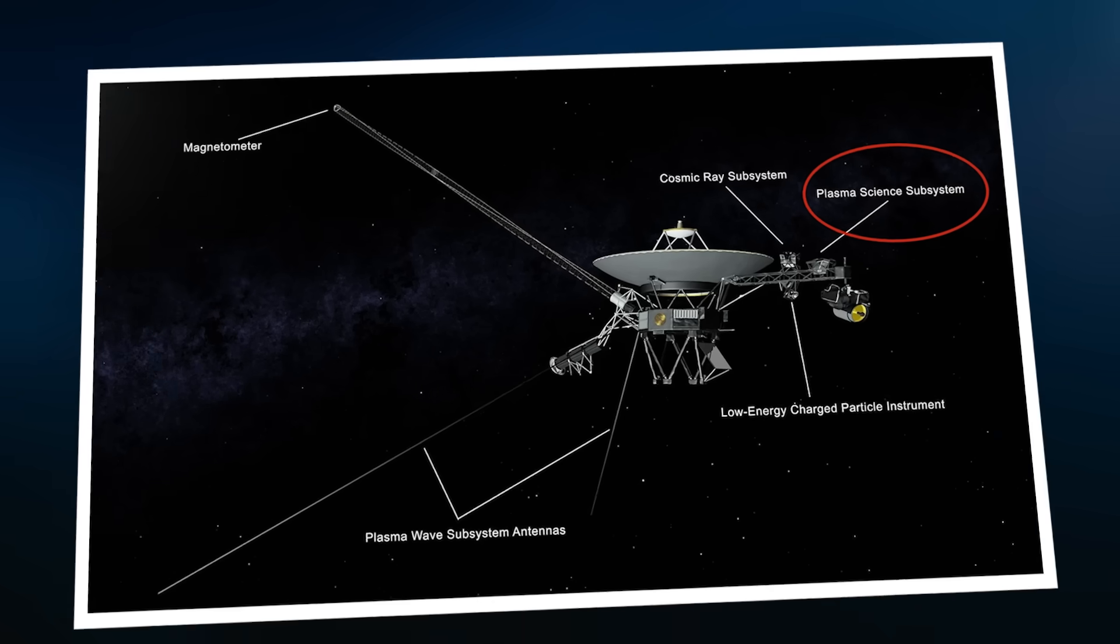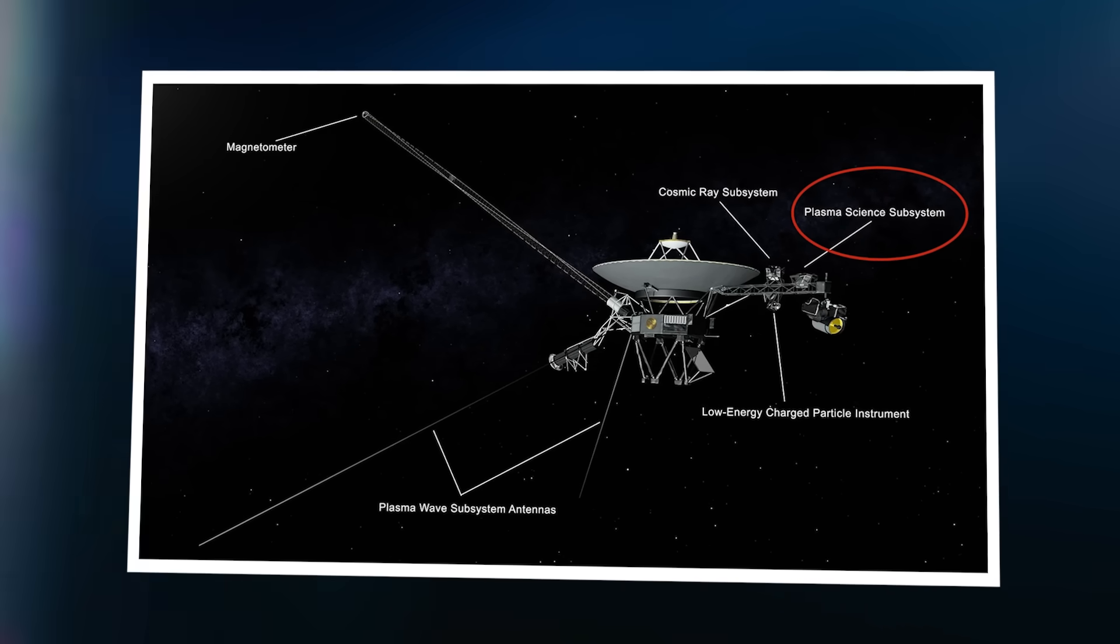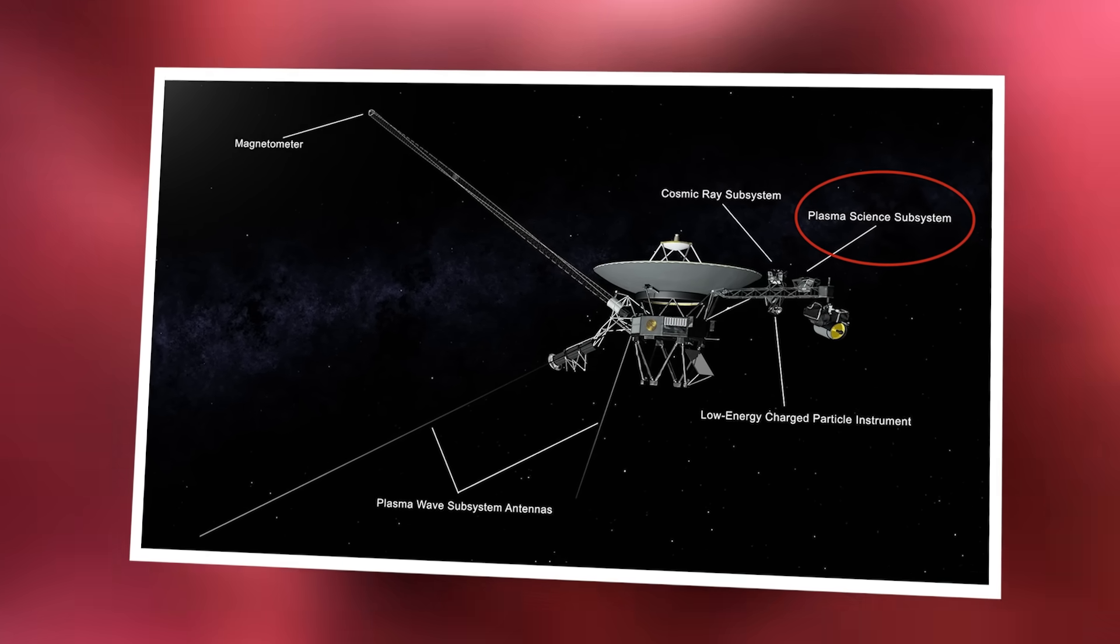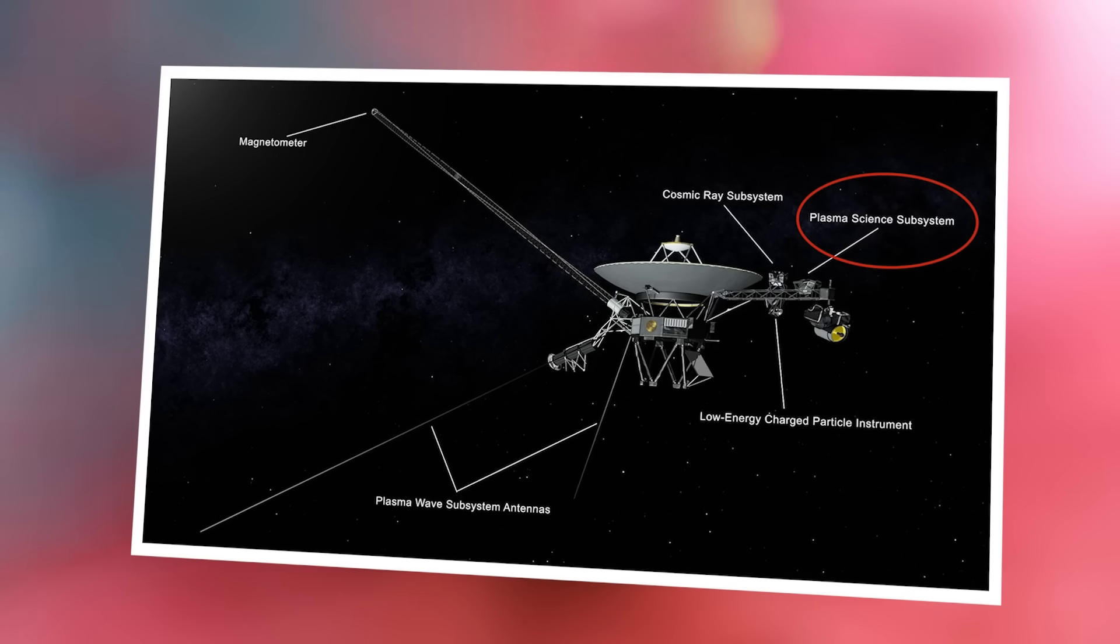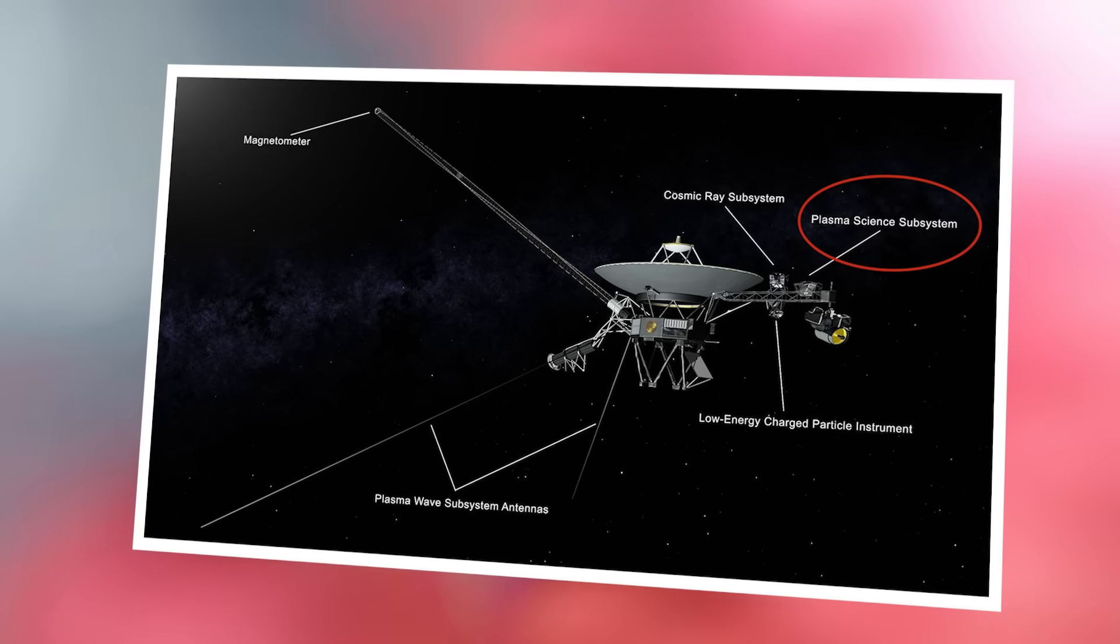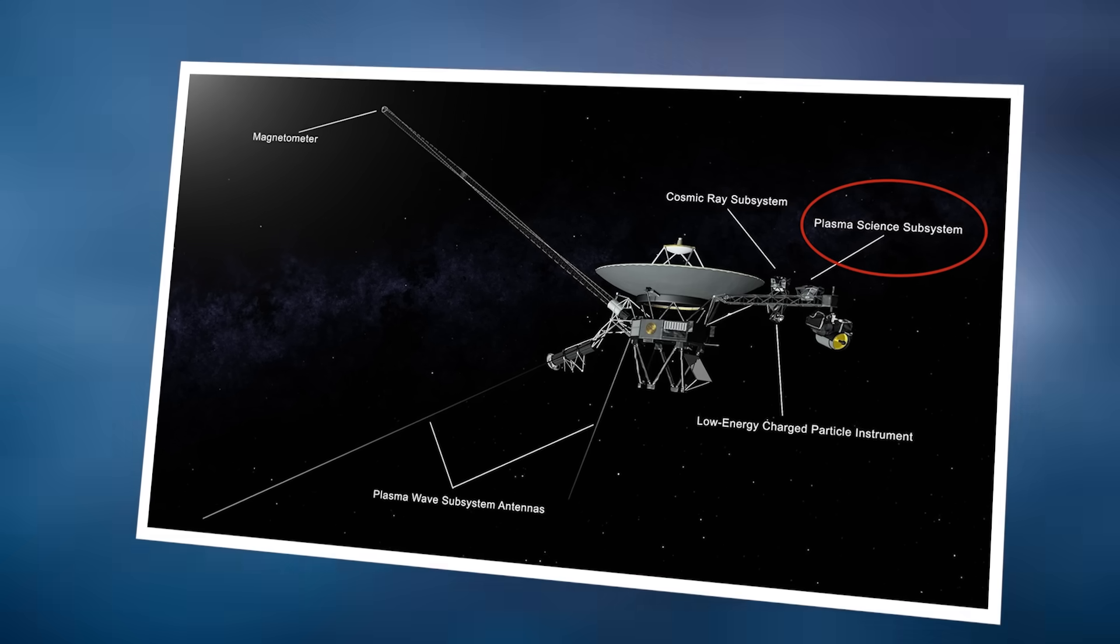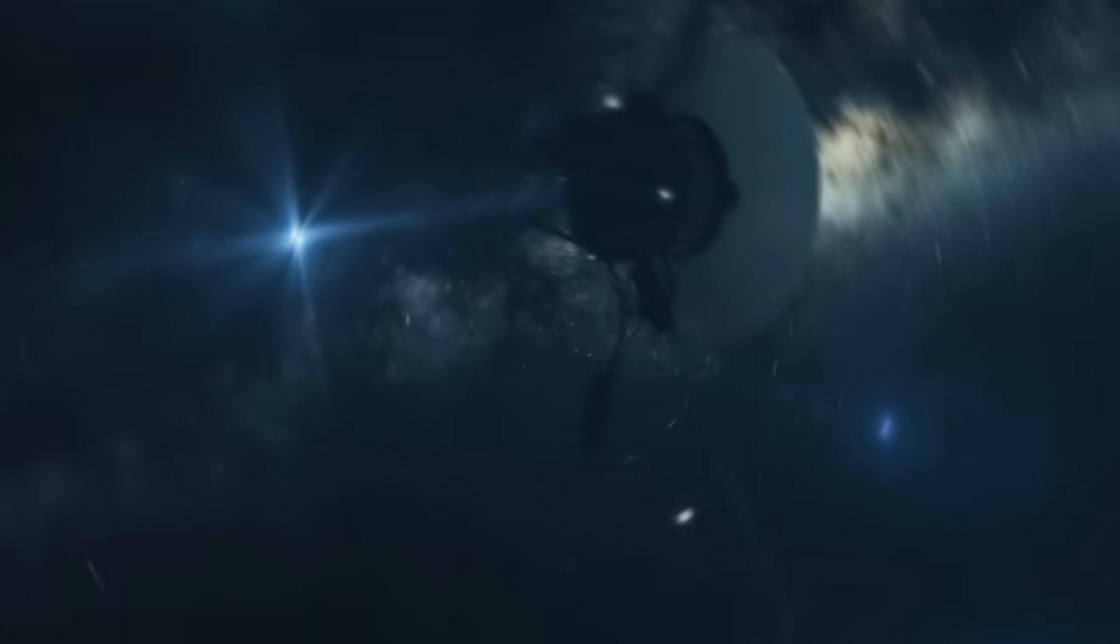One of Voyager's most surprising components is its plasma wave instrument, a delicate system that records the density of the space around it by listening to the vibrations of charged particles. It wasn't meant to survive this long, especially not in the cold, dark void where temperatures flirt with absolute zero. And yet, not only is it working, it recently sent back data that defies explanation.